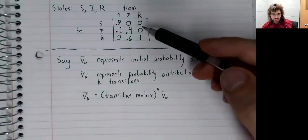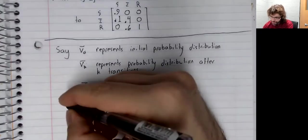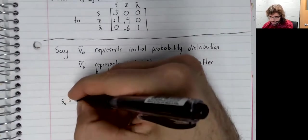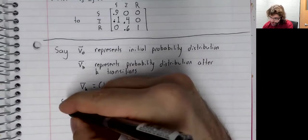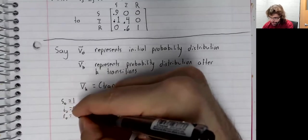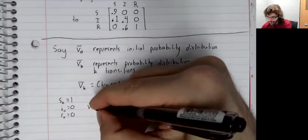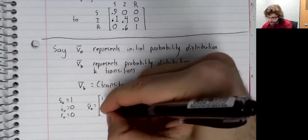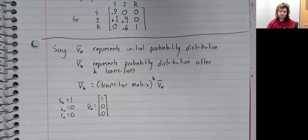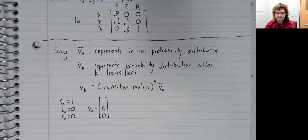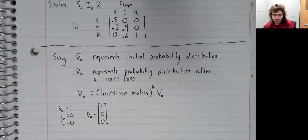So let's say in this outbreak, I am initially susceptible. So I'm susceptible with probability one, infected with probability zero, recovered with probability zero. So we have this as our initial probability distribution. I think I said that every day we have a transition.